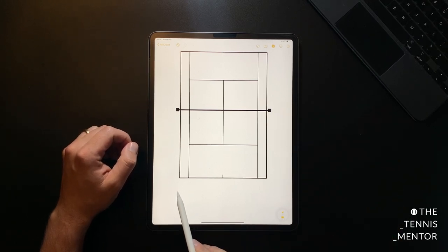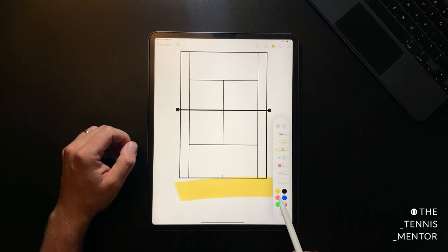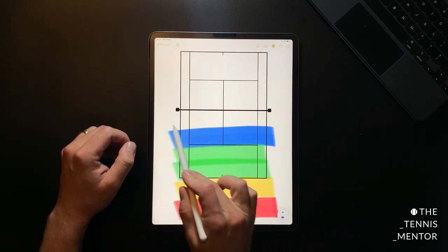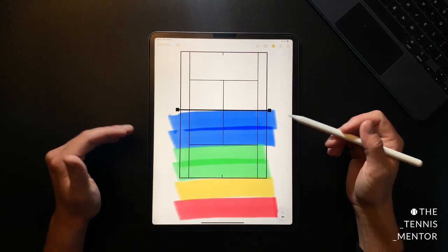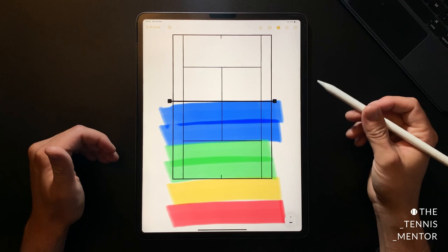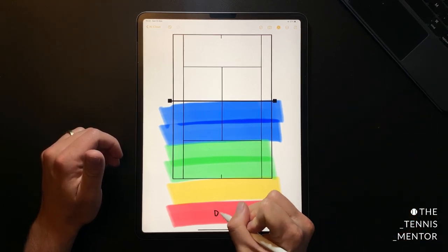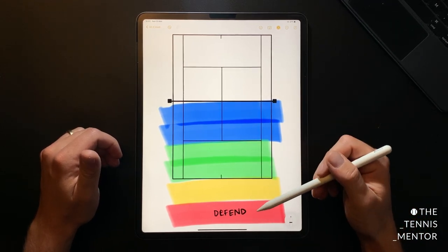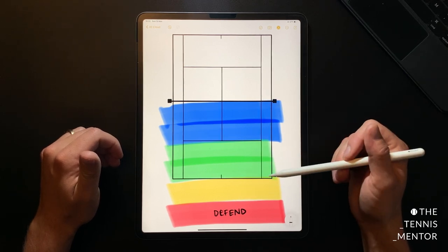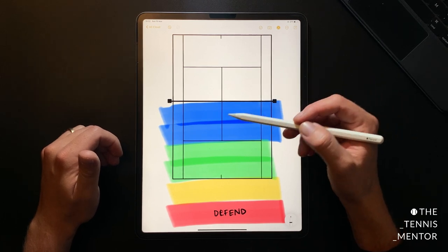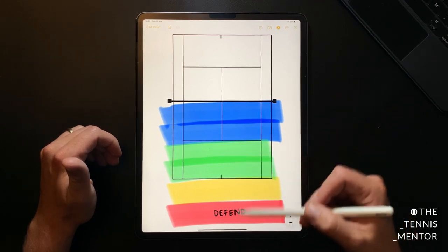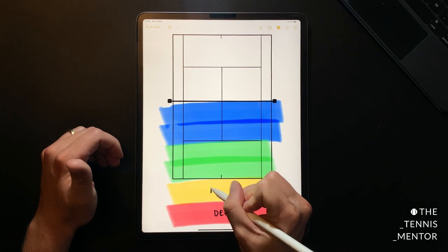So first of all I'm going to split the court into some different areas. In any point you're going to be stood in one of these zones. If you are stood in the red zone at the back of the court your priority should be to defend. Anytime you're this far back on the court it's going to be incredibly difficult for you to put your opponent under any pressure. Your priority when you're this far back is to defend and to get yourself back into the yellow zone which we are going to call neutral.